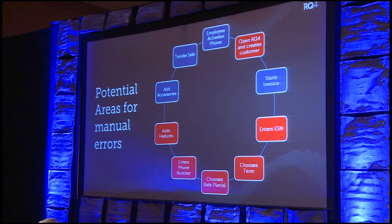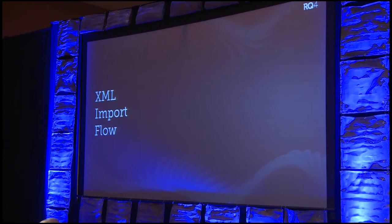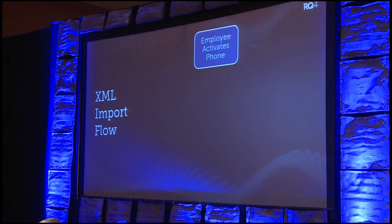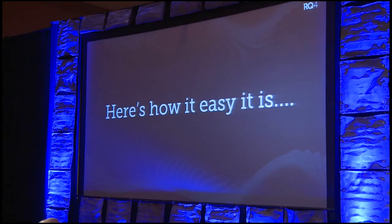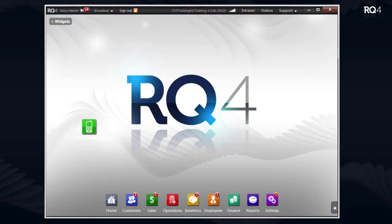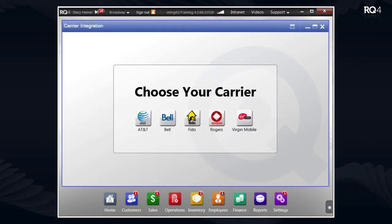All of those steps need to be very accurate for reconciliation purposes. If we take the XML that the carrier provides, here's what the flow changes to: activate the phone, import the XML into RQ4, add accessories, tender the sale — that's it. We open RQ4, click on the carrier activation widget, choose our carrier — if you only have one carrier, you won't even see this screen, it just knows.